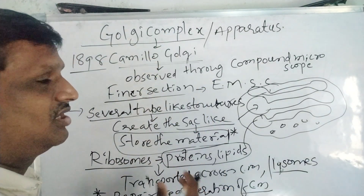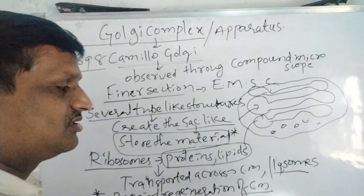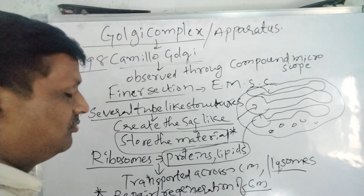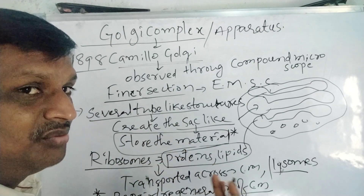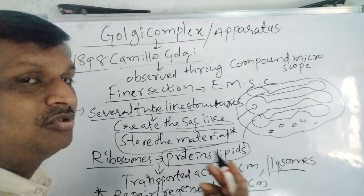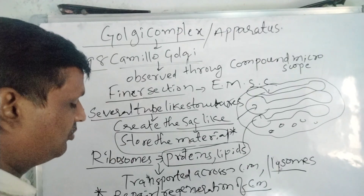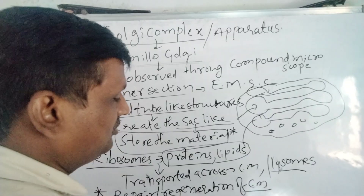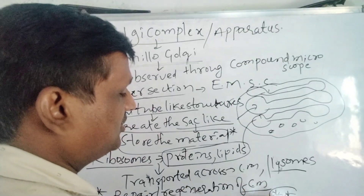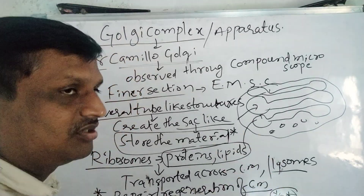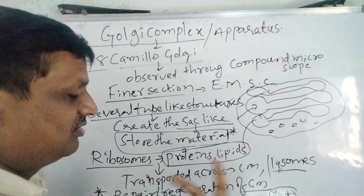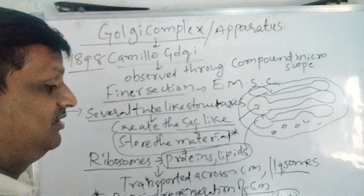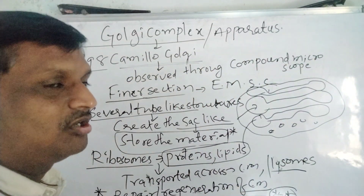Golgi bodies differ from cell to cell. The Golgi complex is much larger in secretory cells — that is, cells which secrete enzymes or hormones. The size and number of Golgi bodies are greater in cells that produce enzymes or hormones.